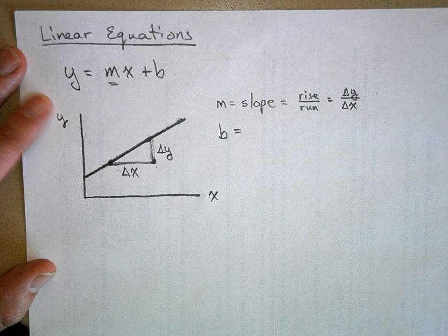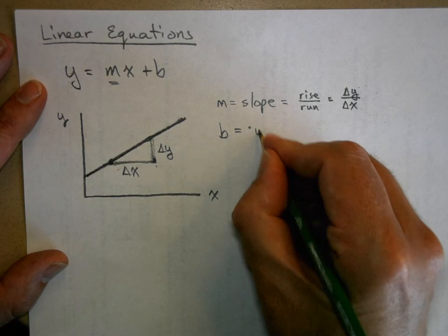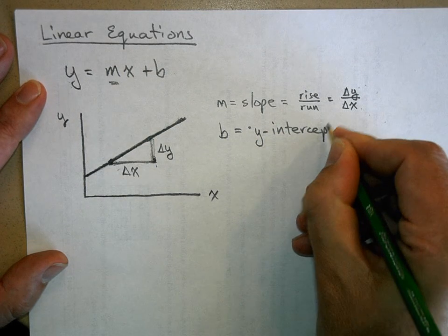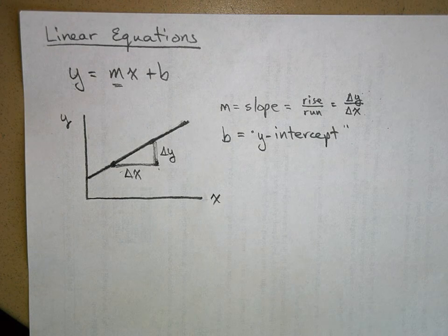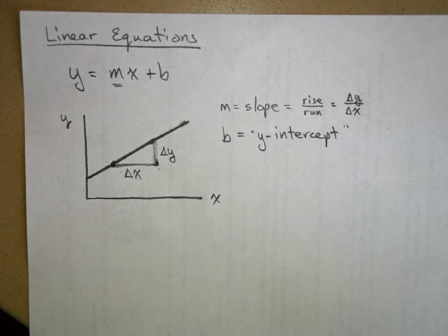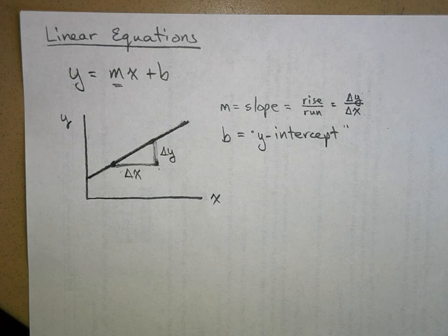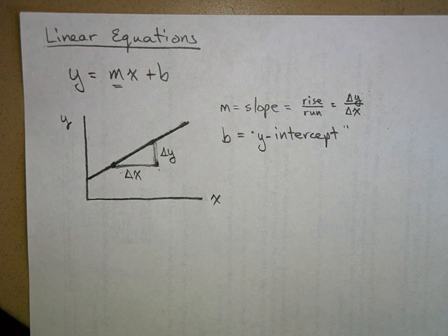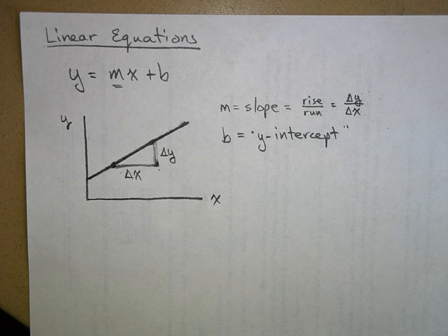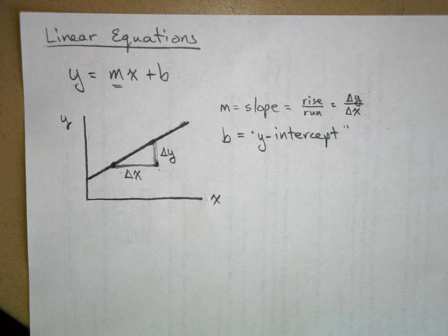Now what does B represent? That was called the Y-intercept. You will very rarely hear me call it Y-intercept. The Y-intercept is the value of Y when X is zero — it's where this line crosses the Y-axis. So the Y-intercept is the value for Y when X equals zero.